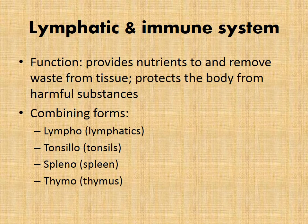The lymphatic and immune system provides nutrients to and removes waste from tissue, and it protects the body from harmful substances. Combining forms for that would be lympho for lymphatics, tonsillo for tonsils, spleno for the spleen, and thymo which refers to the thymus.